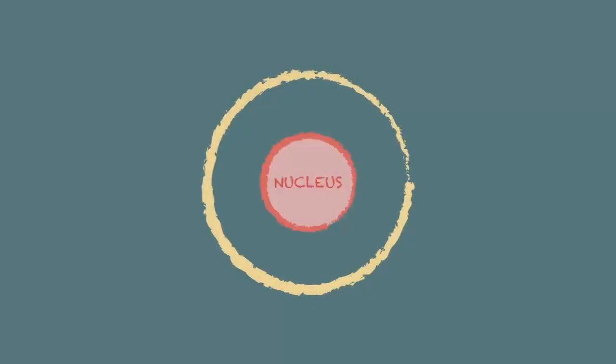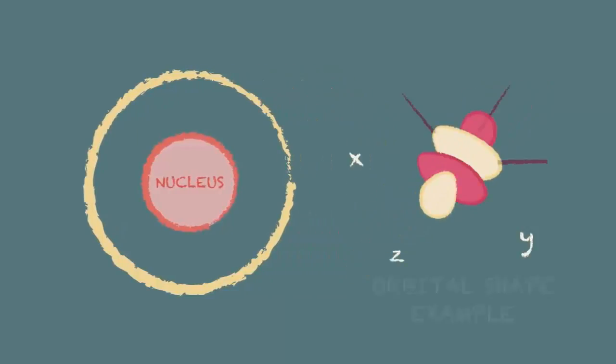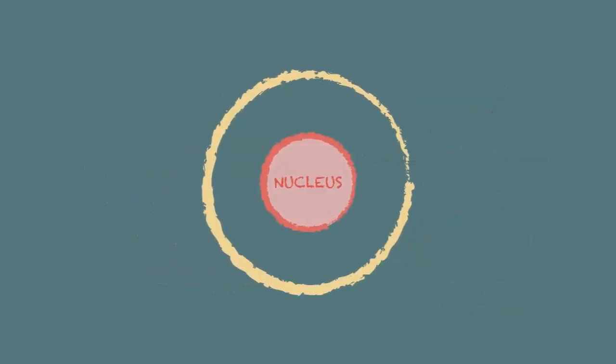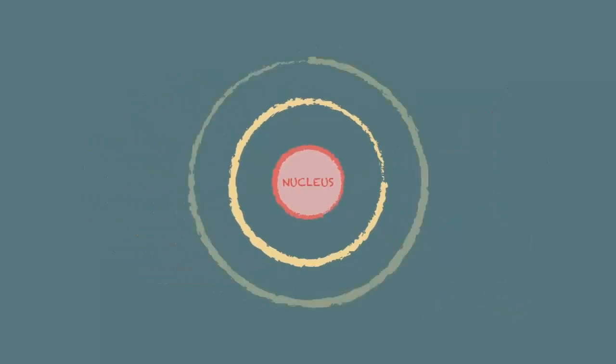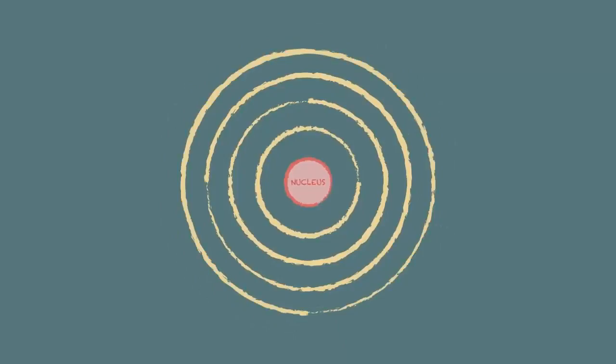Electrons are arranged in energy levels or shells around the nucleus of an atom. The actual orbit shapes are a bit too complicated to cover in such a short lesson, but on average the orbital radius increases as the energy levels increase.